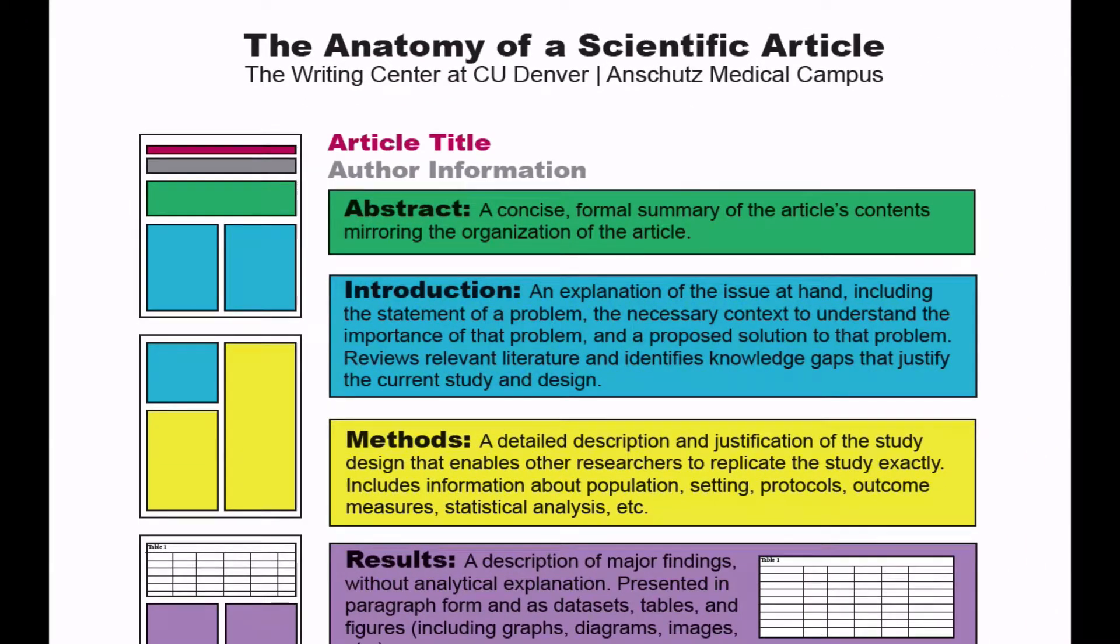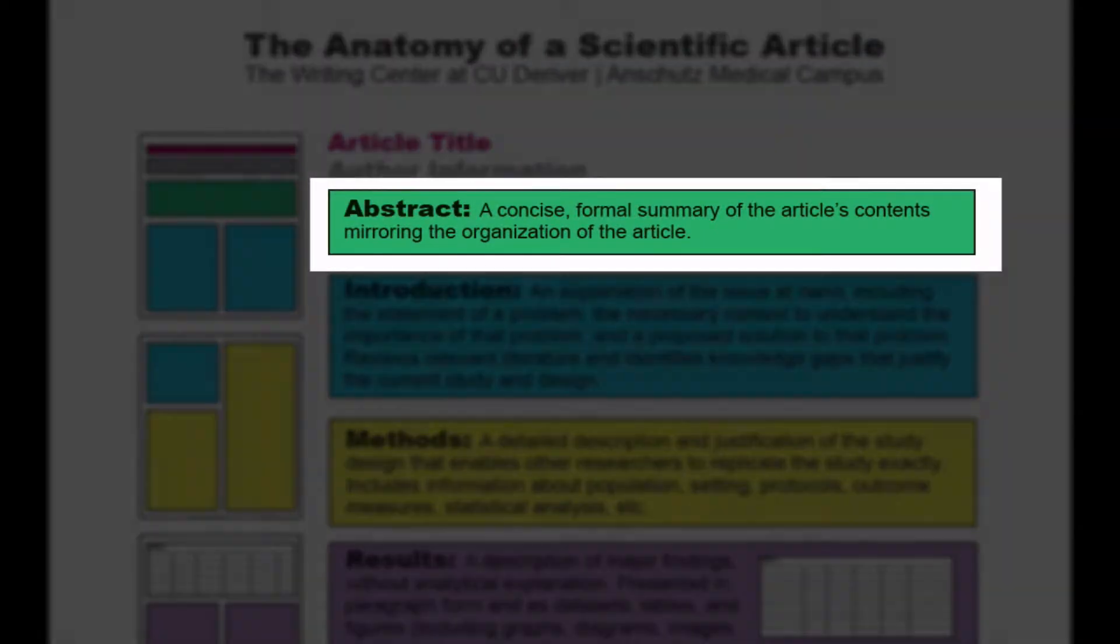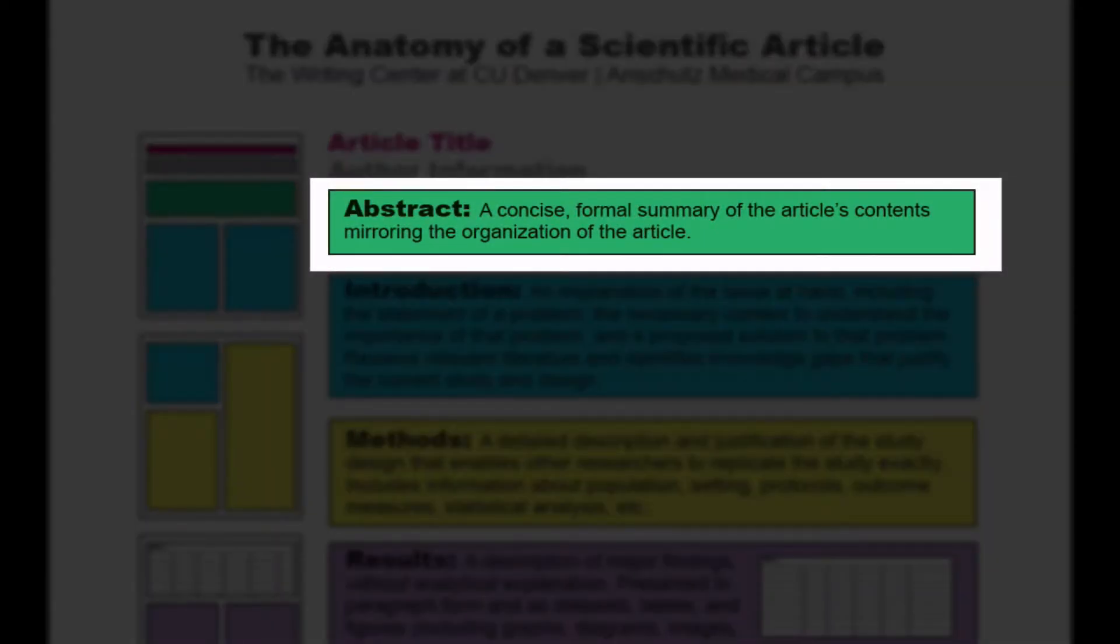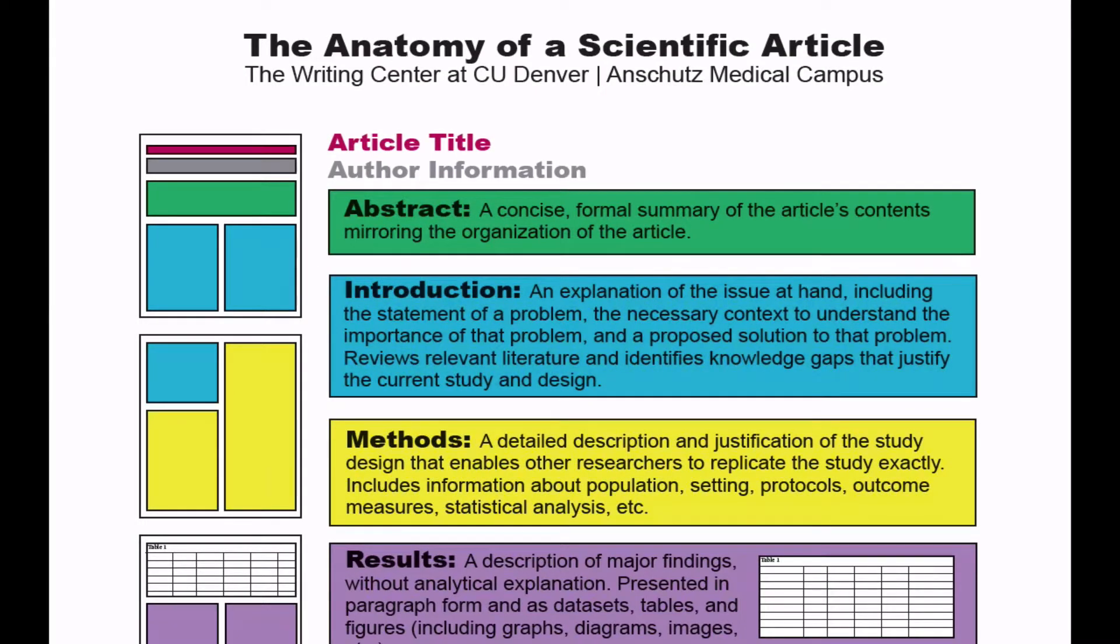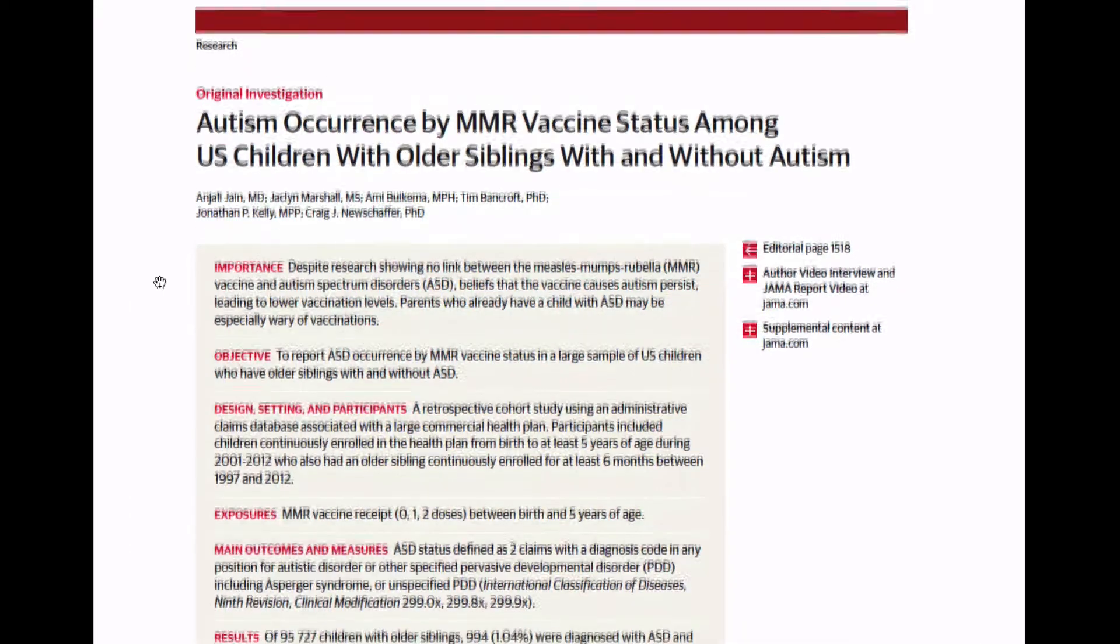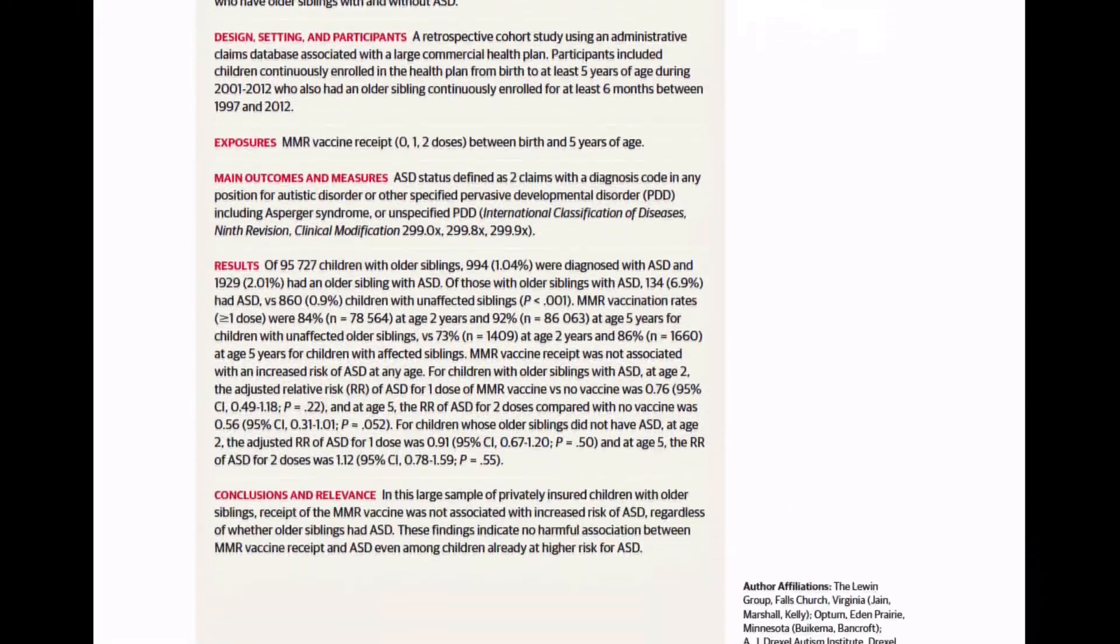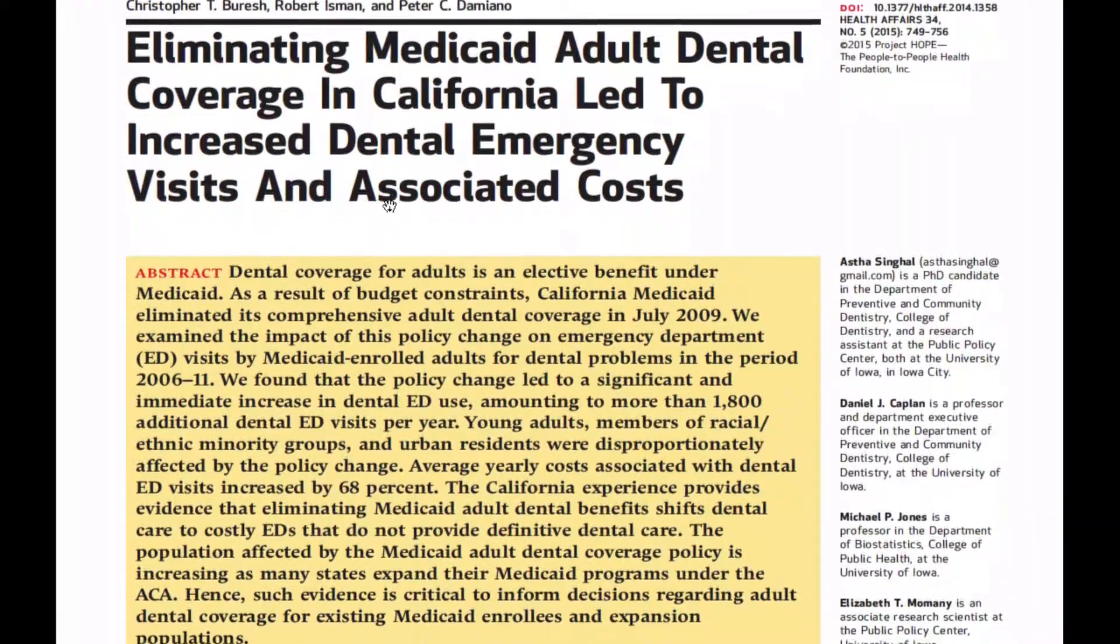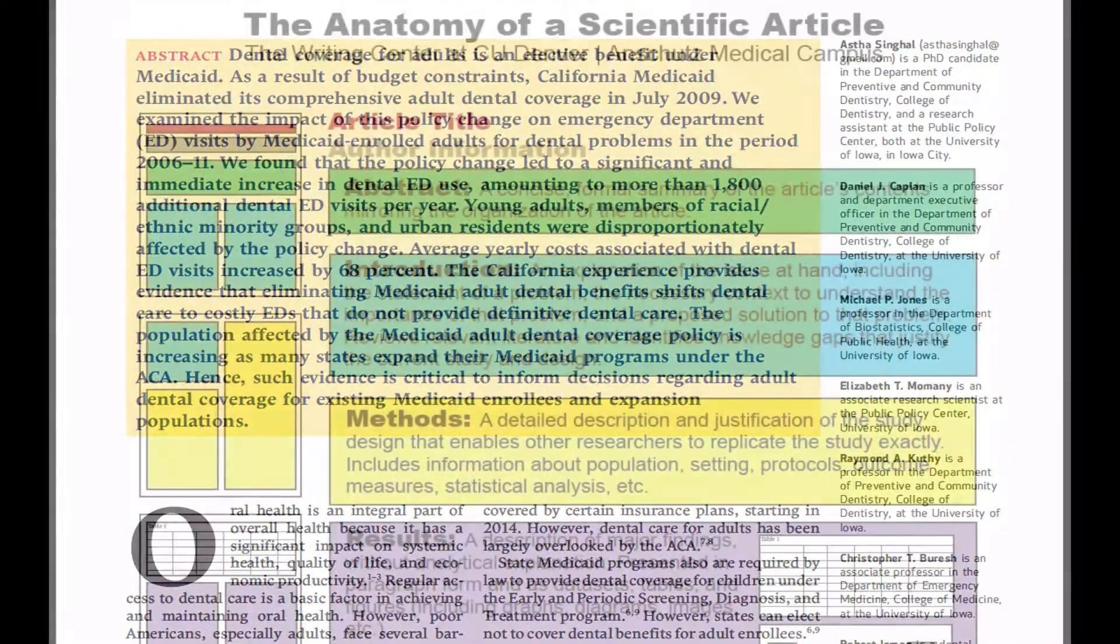The first major section of text in the article is the abstract, a concise, formal summary designed to help readers quickly determine whether the entire article is relevant to their research or interests. Abstracts generally contain 1-3 sentences corresponding to each of the article's sections or subsections. Many abstracts are what's called structured, which means each subsection is separated by a bolded heading. Other abstracts are simple paragraphs. Regardless, they almost always mirror the organization of the rest of the article.